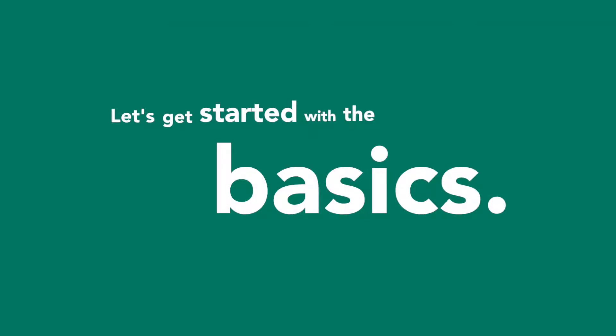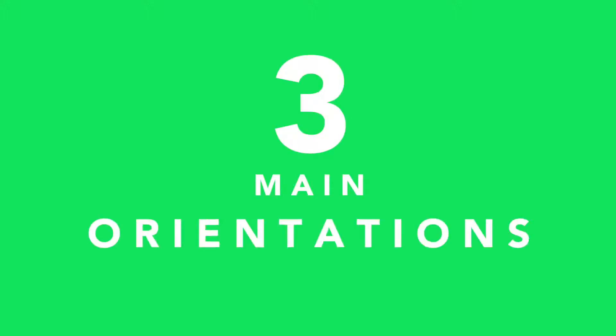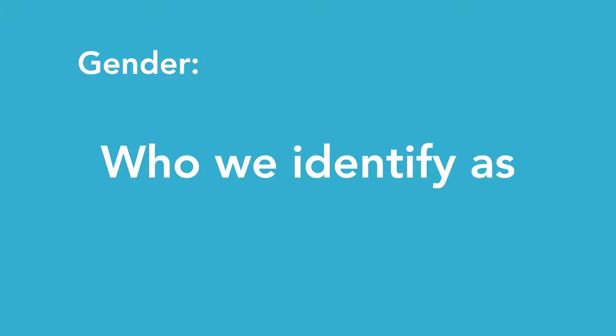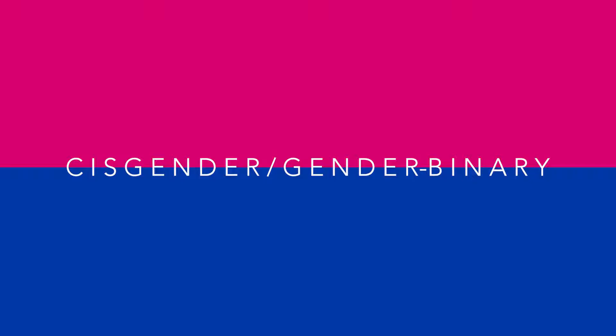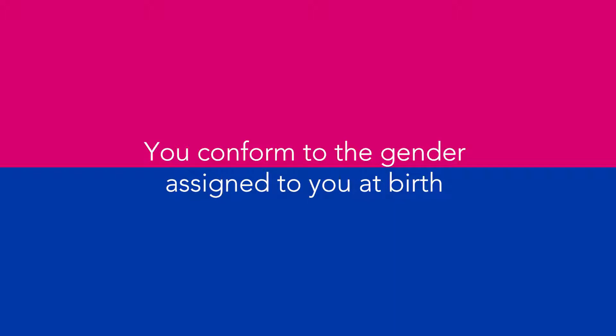Let's get started with the basics. There are three main orientations: gender, sexual, and romantic. Gender is fairly easy to define — it is who we identify as. There is cisgender, which most people are. It means that you conform to the gender assigned to you at birth, whether it's boy or girl.